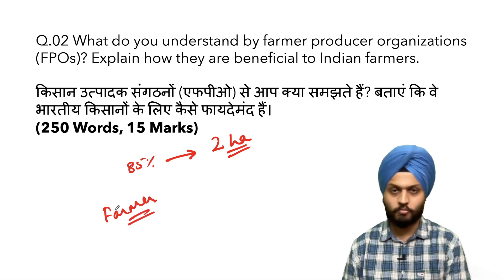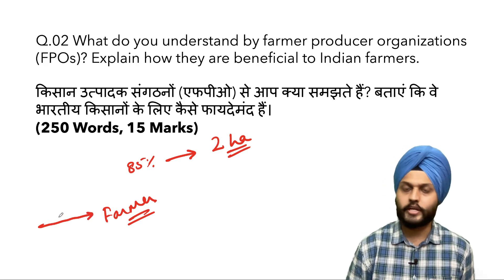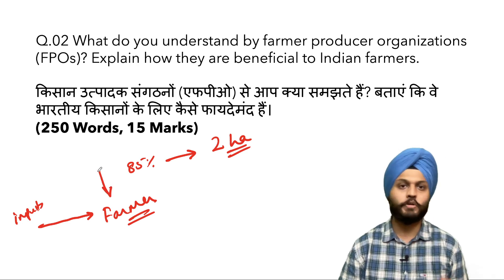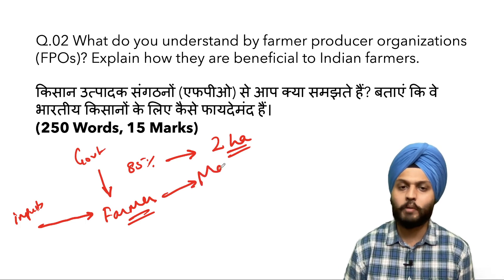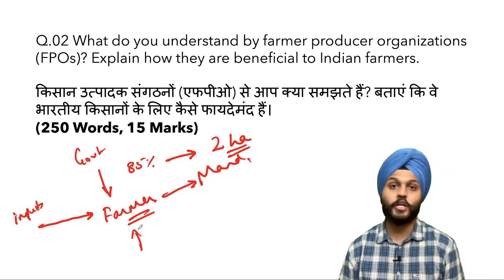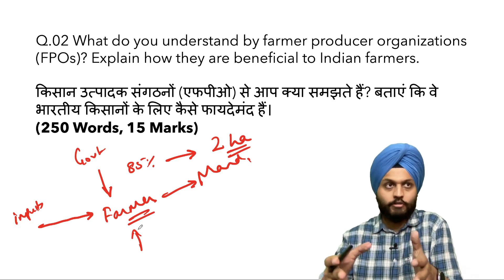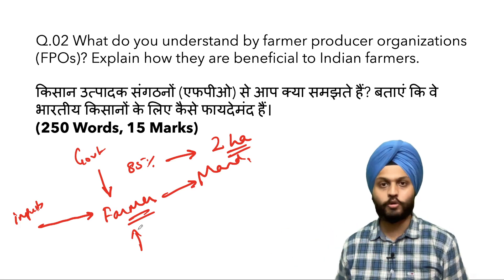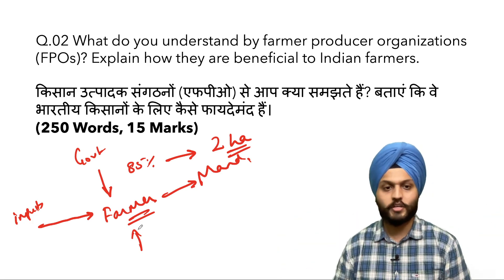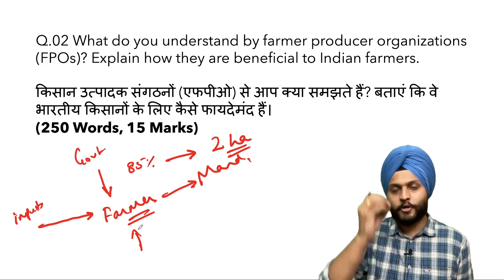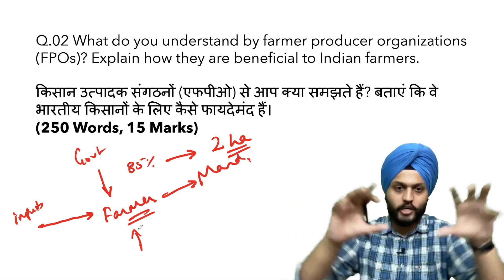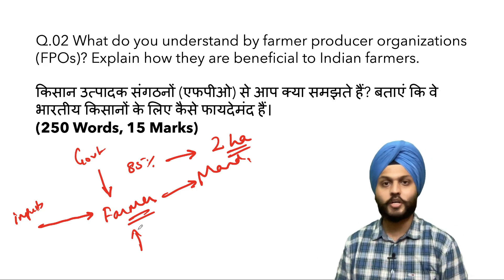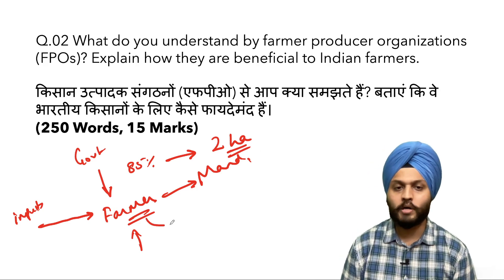When we talk about a small farmer, his ability to negotiate for inputs is less. He cannot effectively lobby with the government. When selling in the mandi, he is at a disadvantage. A large farmer could invest in cold chain or store buffer stock for longer, but small farmers cannot. The idea of farmer producer organizations is very simple — group all these farmers together, form a farmer producer organization.